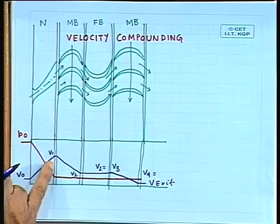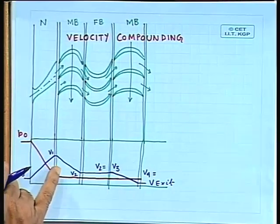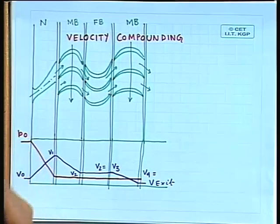For each stage we will have different velocity diagrams because the magnitude of velocity changes throughout the stages. This is also called Curtis compounding. The only velocity that remains constant from stage to stage is the blade tangential velocity Vb; all other velocity components change from stage to stage.